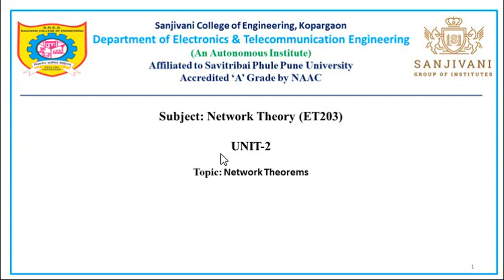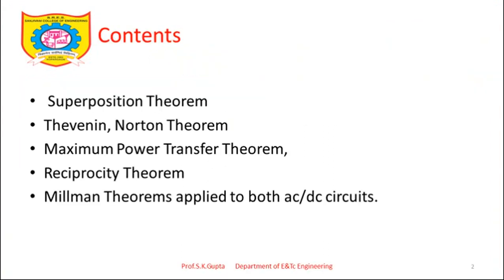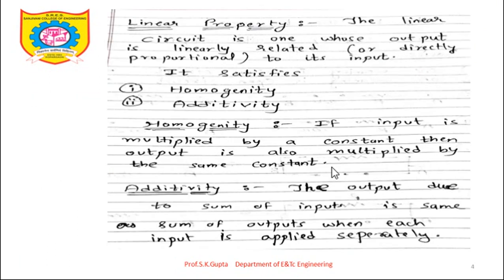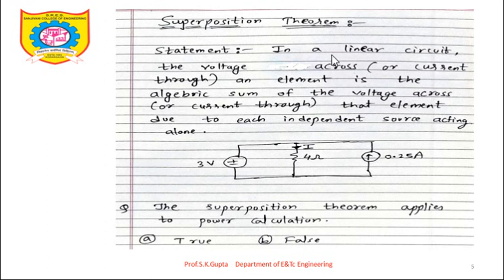Welcome all. In the last video we started Unit 2: Network Theorems. The first point we covered is the superposition theorem. Before that we saw the linearity property — according to which a circuit satisfies homogeneity and additivity. The superposition theorem is applicable only for linear circuits.